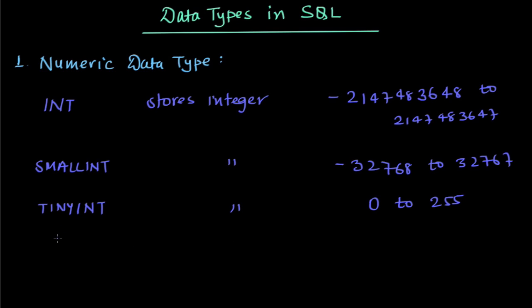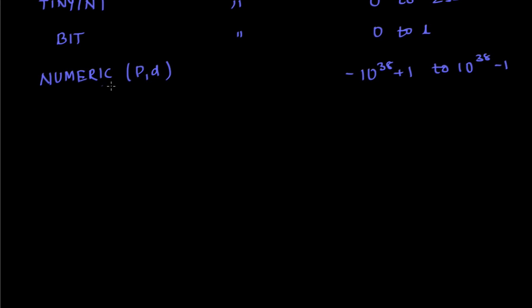Similarly we also have BIT data type. So it stores one bit, that is either 0 or 1. So it will store 0 to 1.